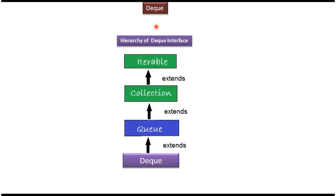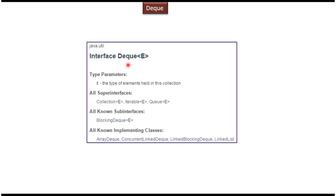In this video tutorial I will cover Dequeue. Here you can see the hierarchy of Dequeue. Dequeue Interface extends Queue Interface. Queue Interface extends Collection Interface. Collection Interface extends Iterable Interface. Dequeue Interface belongs to the Java.util package.